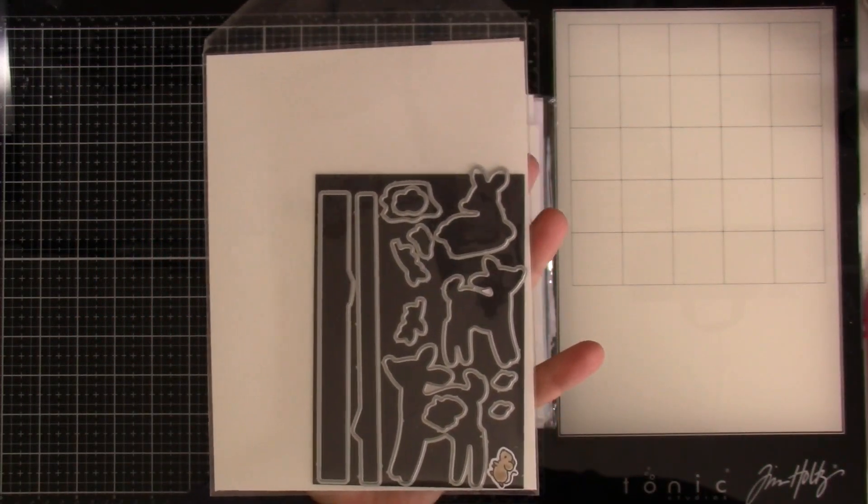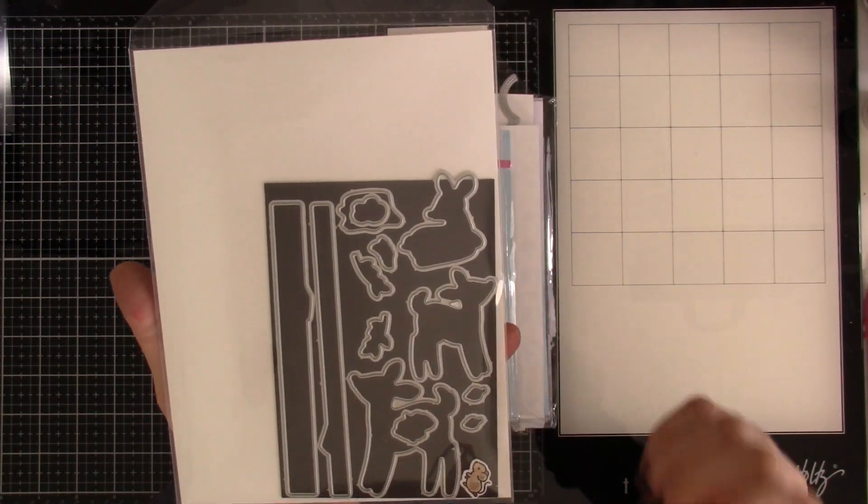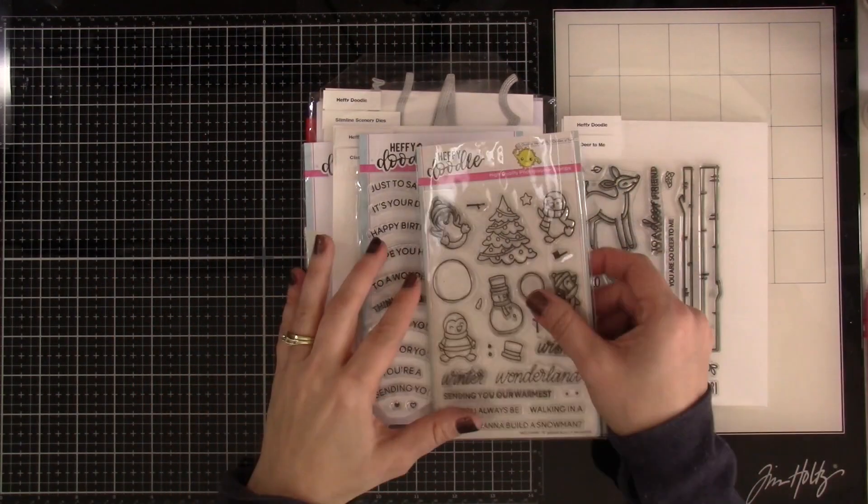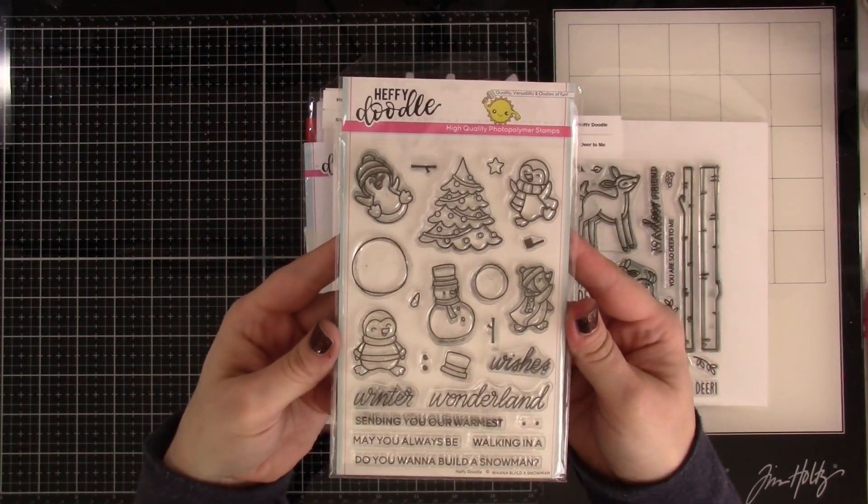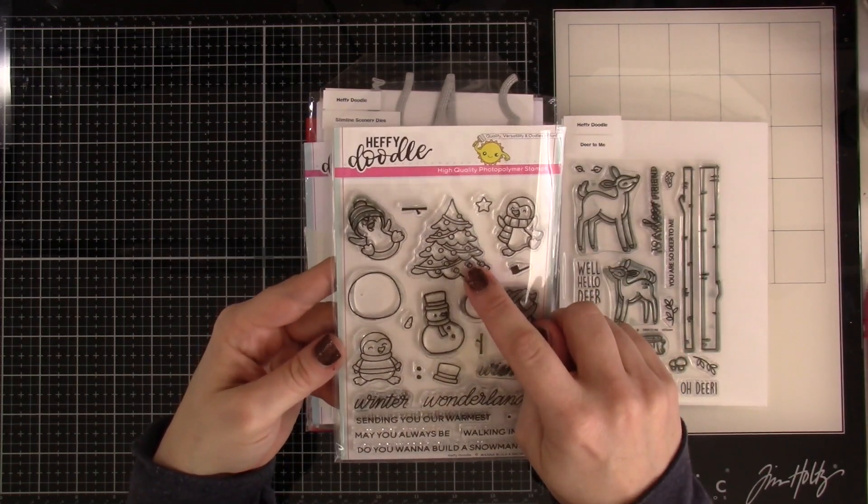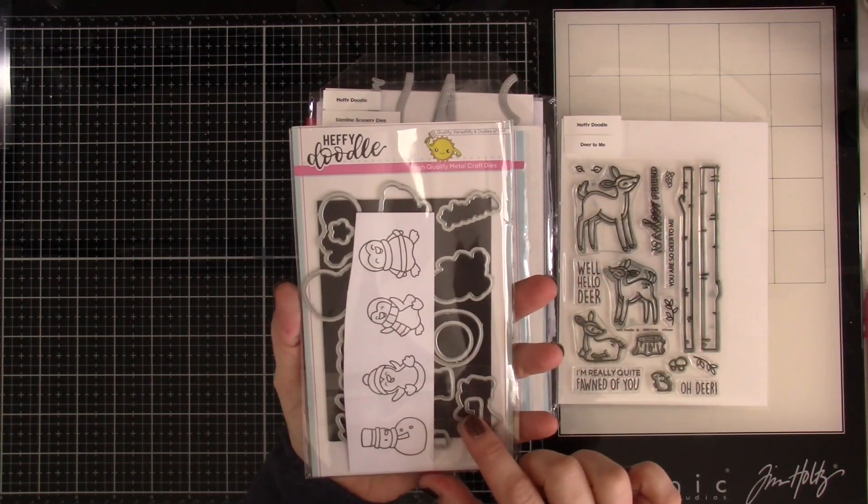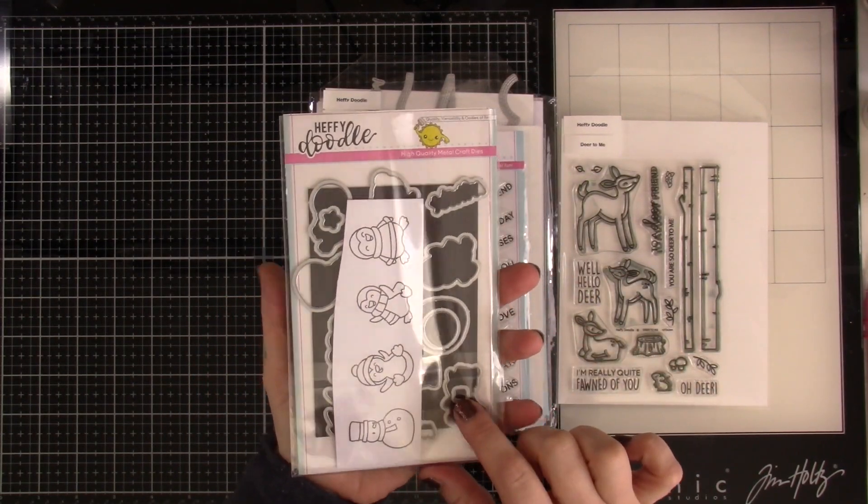Let's talk about the products we're using. This is our Dear to Me stamp set along with the matching dies, of course. We're also going to be using the Wanna Build a Snowman. I want just the tree from this stamp set and I have the matching dies that go along with it as well.